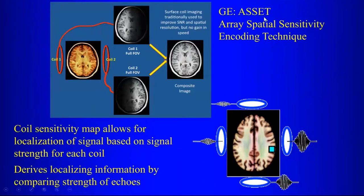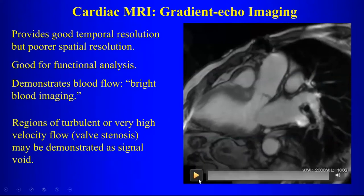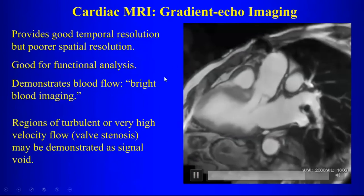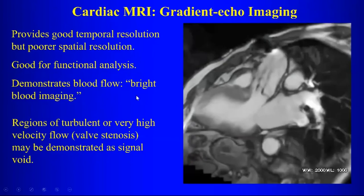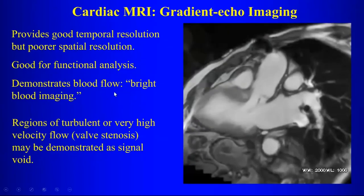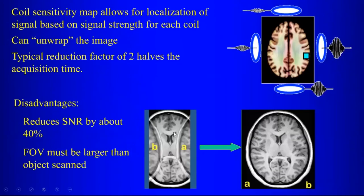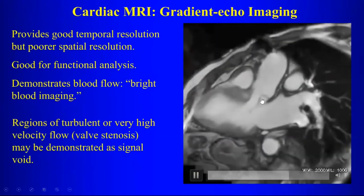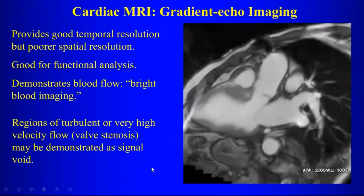Moving on to gradient echo or bright blood imaging. When we do these bright blood imaging cinematic sequences, we get very good temporal resolution but the spatial resolution is not as good. This is good for functional analysis — we use it to look at wall motion and to calculate stroke volumes and cardiac outputs. The blood flow is demonstrated as bright, and where there's turbulent flow, as in this patient with aortic stenosis and regurgitation, we get low signal jets depicting the turbulent flow.